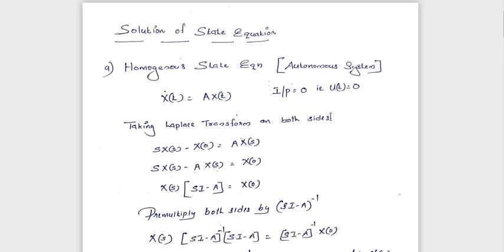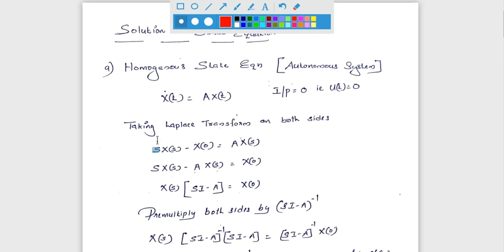Taking Laplace transform on both sides: x-dot(t) becomes s·X(s) − x(0), and A·x(t) becomes A·X(s). So s·X(s) − A·X(s) — by taking x(0) to the right side and taking X(s) as common — it becomes X(s)·(sI − A) = x(0).